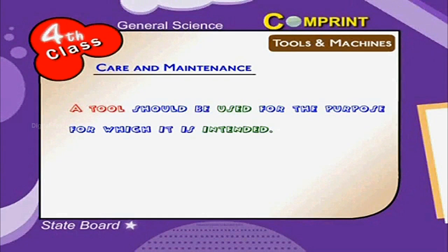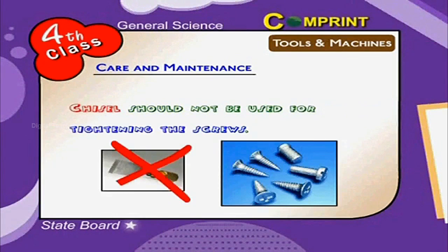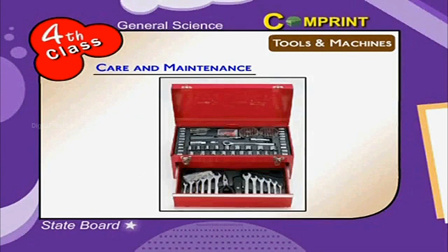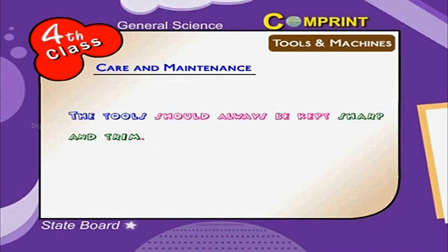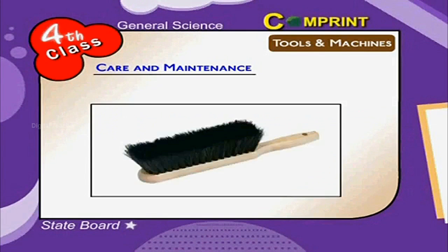The following care must be taken for the long life of tools: a tool should be used only for the purpose for which it is intended. For example, a chisel should not be used for tightening screws. Every tool should have its place and should be replaced there when not in use. Tools should always be kept sharp and trim. Rust on iron tools should be removed with a brush.